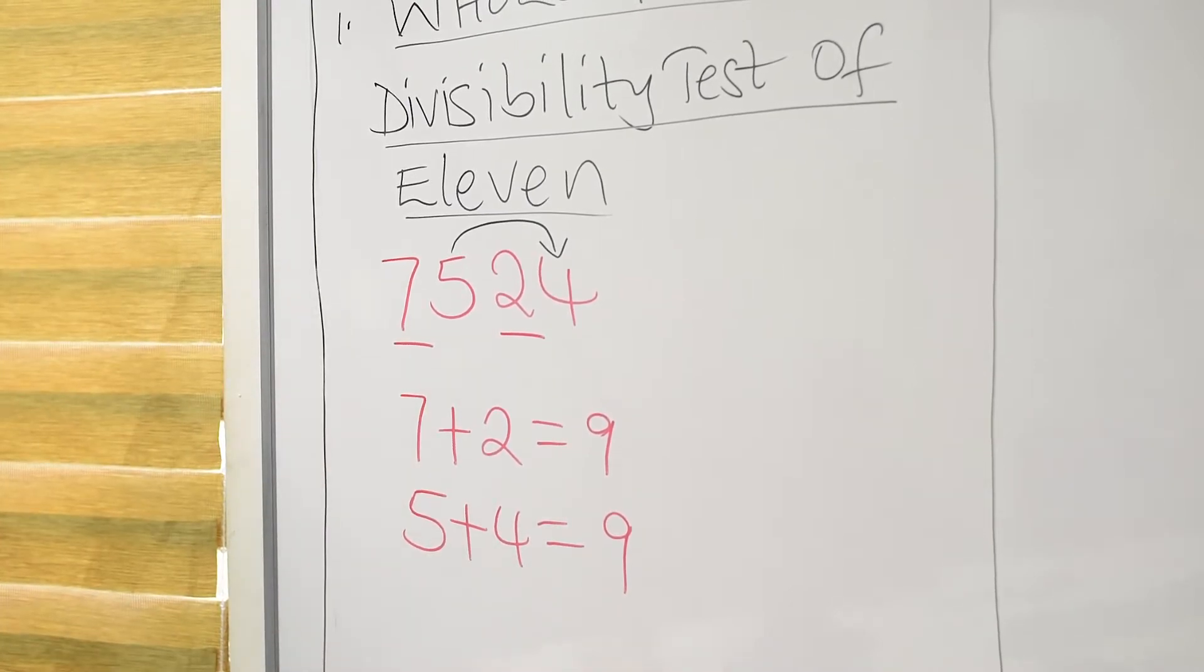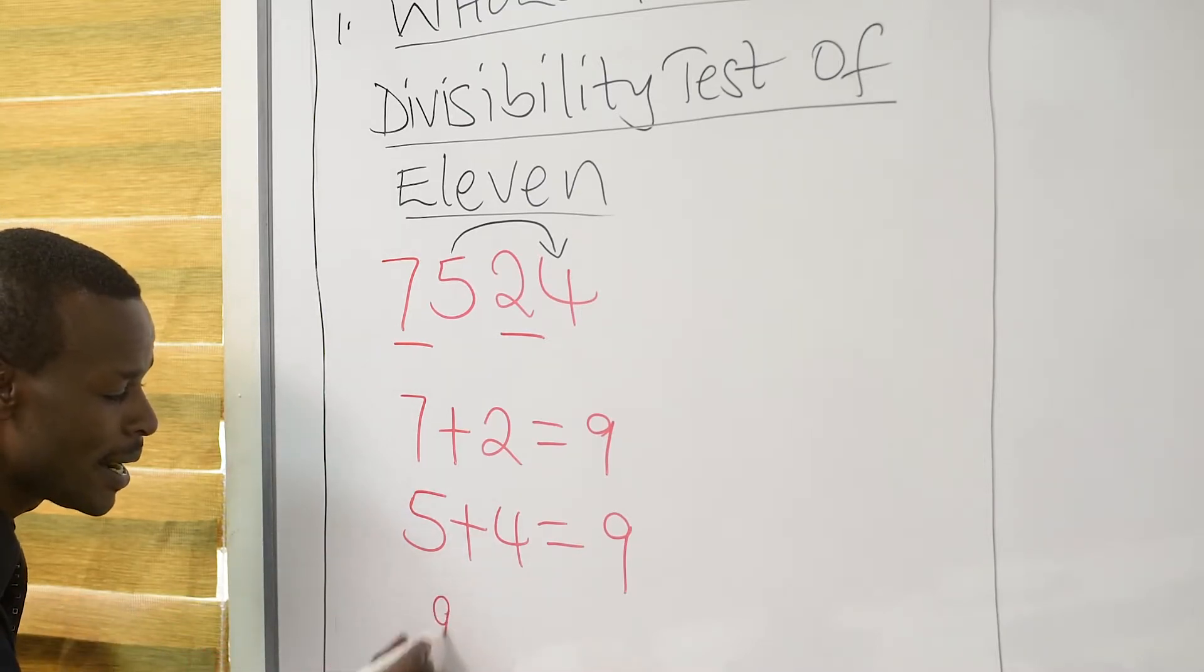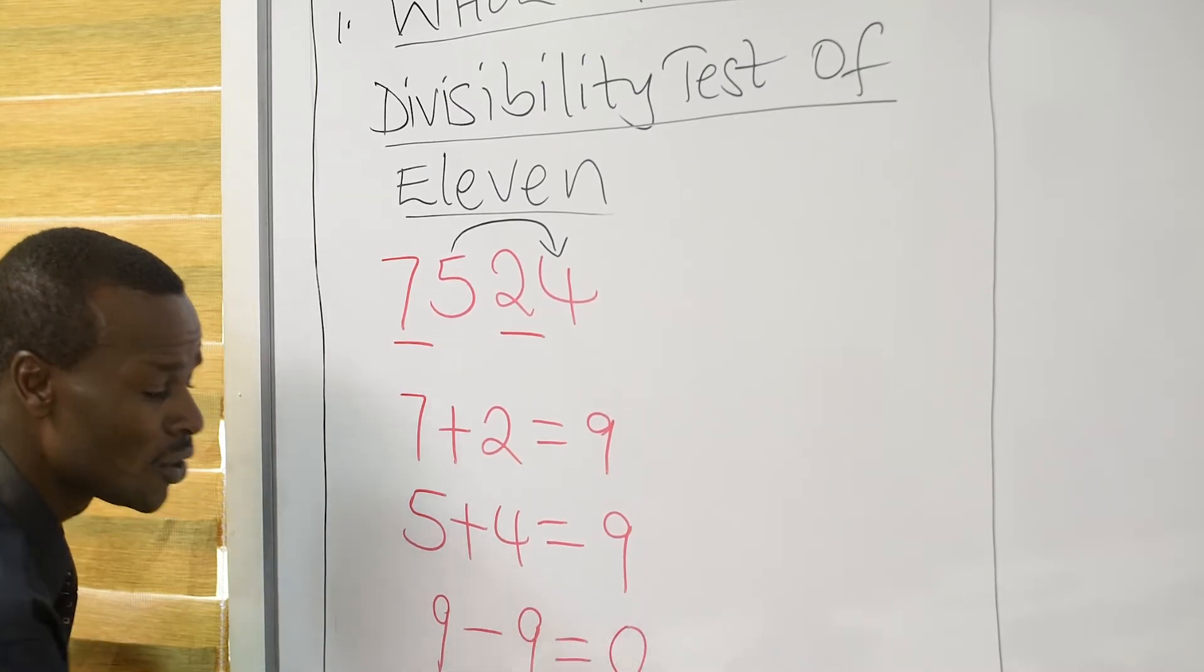Those are the sums of the digits in the alternate places. So, the next thing we do is to find the difference between them. That is 9, take away 9, which will give us 0.